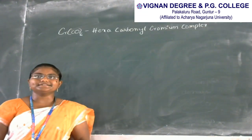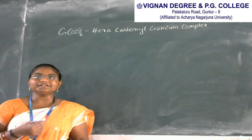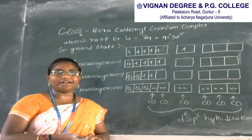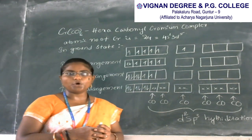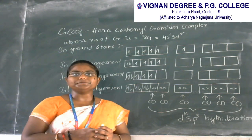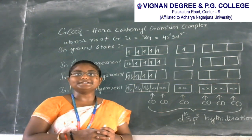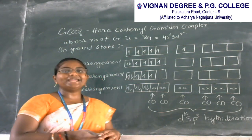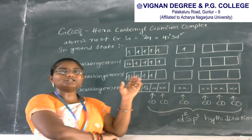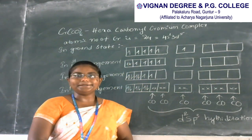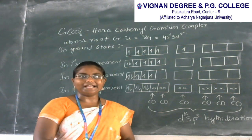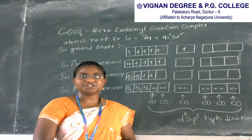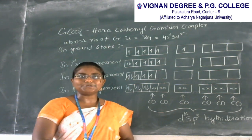The next structure is hexacarbonyl chromium complex, which is similar to the vanadium complex. The ground state electronic configuration of chromium is 4S1 3D5, not 4S2 3D4, because chromium shows anomalous electronic configuration in the 3D series. This is because when the D orbital is half-filled with 5 unpaired electrons, it gains extra stability.